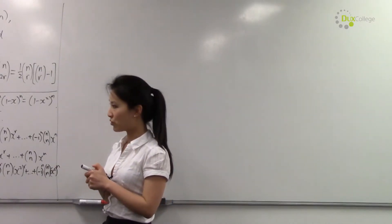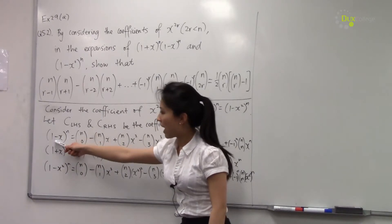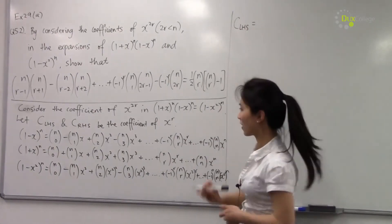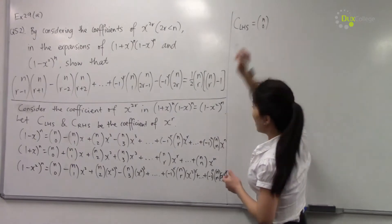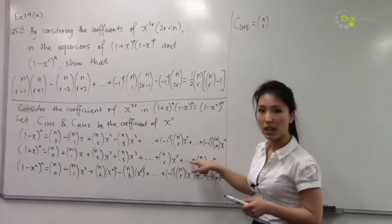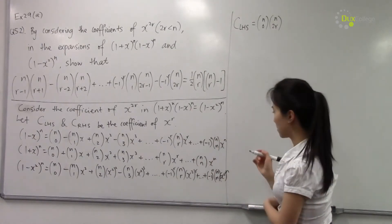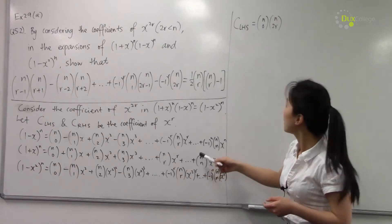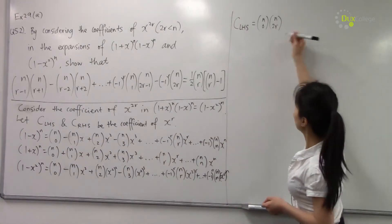Now let's compare the coefficient of x to the power of 2r on the left-hand side. Let's find the coefficient of x to the power of 2r when we have this line multiplied by this line. The first coefficient, n choose 0, in order to give a coefficient of x to the power of 2r, must multiply by a term in the second expansion that gives n choose 2r. So n choose 2r belongs to x to the power of 2r, so that when multiplied by n choose 0, we get the coefficient of x to the power of 2r for that term.